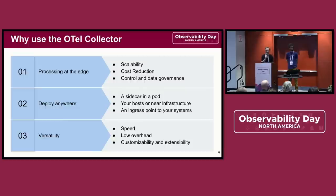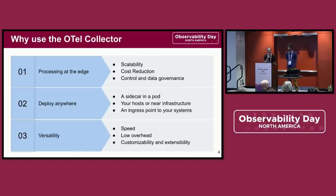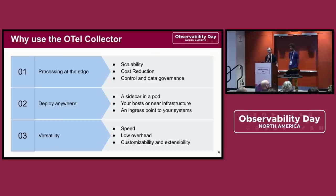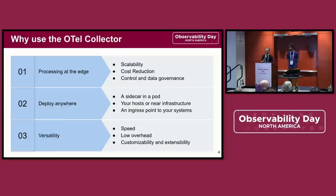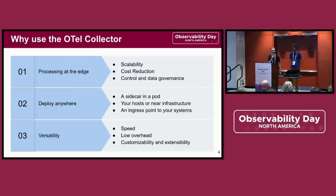You can run the Collector at the edge or anywhere else in your pipeline because it can be deployed anywhere. It can be deployed in containerized, virtualized, or even functions-as-a-service environments. You can process data close to its origins or further away, such as at critical points of your pipeline, like at the point of ingress at the boundary of a secure network. You can trust the Collector to adapt well to these situations because it's fast and versatile. It has been written with high throughput and low latency in mind, so it won't slow down your pipeline, and it has low CPU, memory, and disk space requirements.